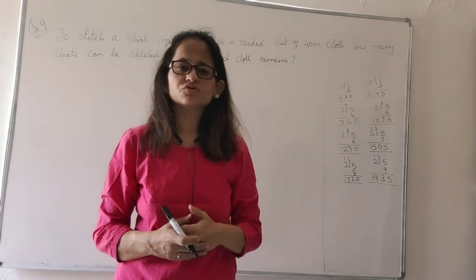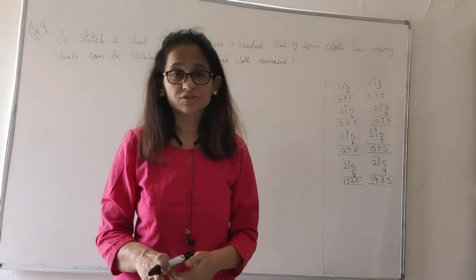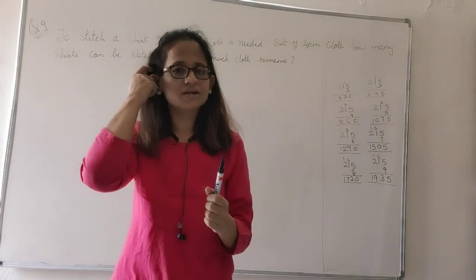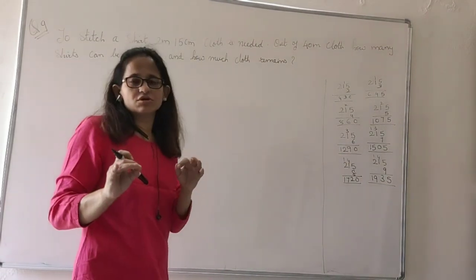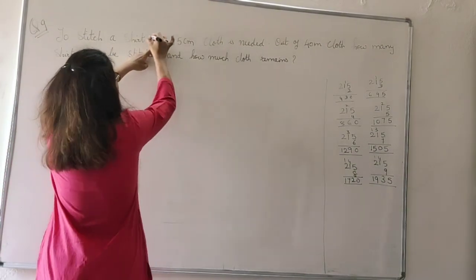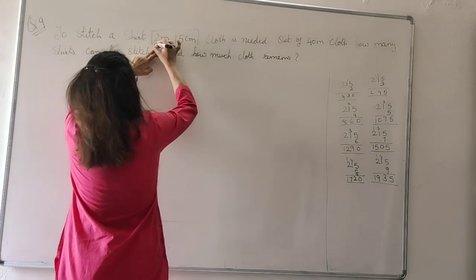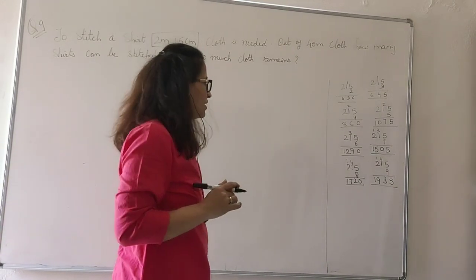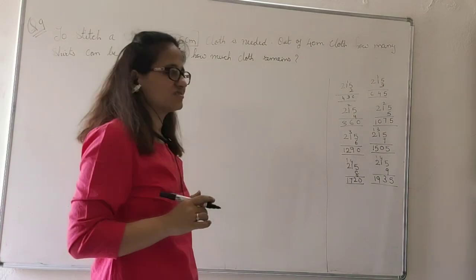But some people go to the tailor shop and get the shirt stitched. For that purpose, you need to buy the piece, the cloth material for the shirt. Now for a shirt, the tailor says that he needs 2 meters 15 centimeters cloth. Out of 40 meters cloth, how many shirts can be stitched?